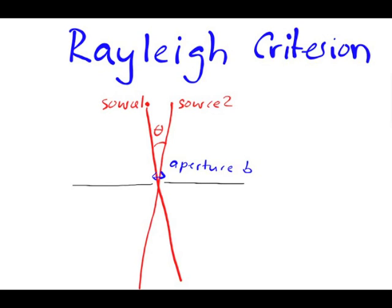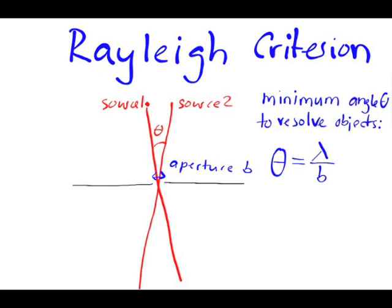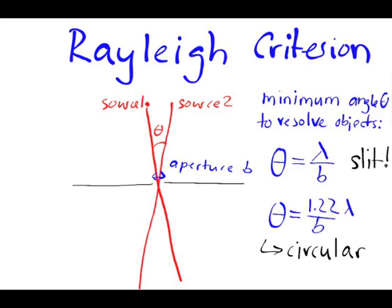The slit or aperture has a width or diameter b. According to what you know about diffraction, the first minimum occurs at an angle theta equal to the wavelength divided by the slit width. For a circular aperture, we need to adjust the formula by a factor of 1.22.